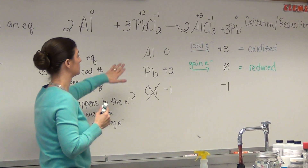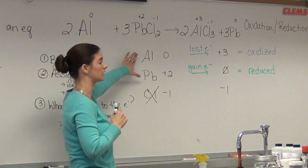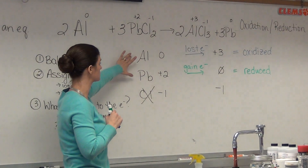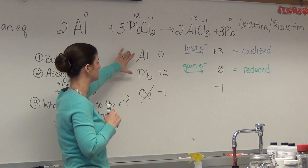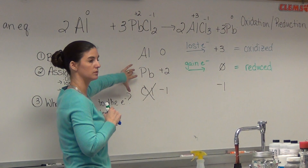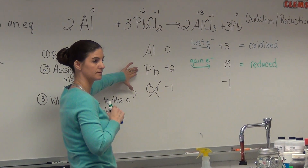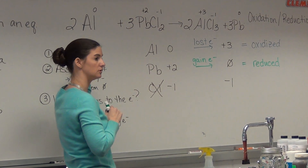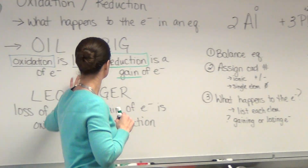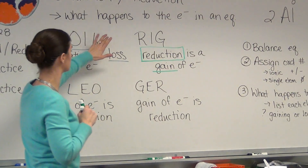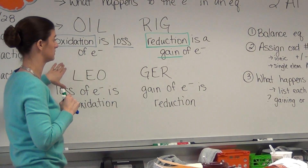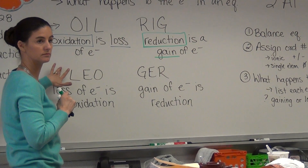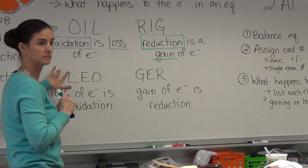So you're going to look at what happened to the electrons — gain or loss? In this case, aluminum lost electrons; in this case, lead gained electrons. Then go back to your mnemonic device — use either OIL RIG or LEO the lion says GRR.